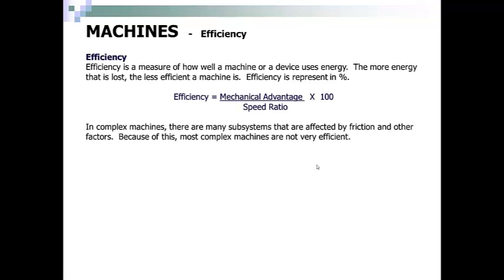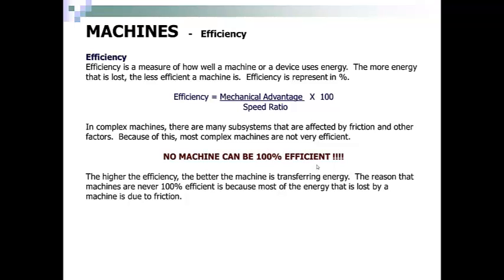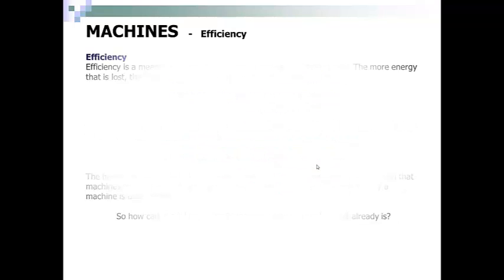In complex machines, there are many subsystems affected by friction and other factors. Because of this, most complex machines are not very efficient. No machine can be 100% efficient. The higher the efficiency, the better the machine is at transferring energy. Machines are never 100% efficient because most energy is lost due to friction.